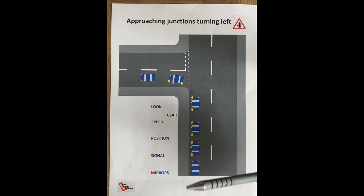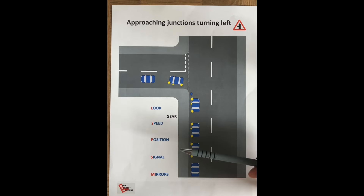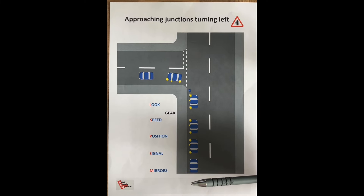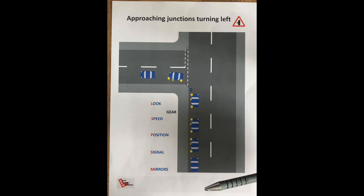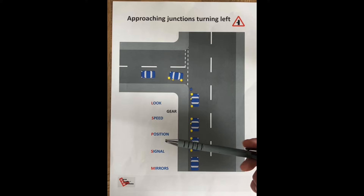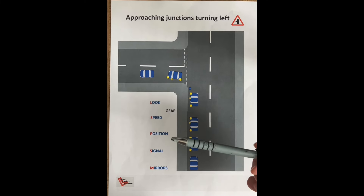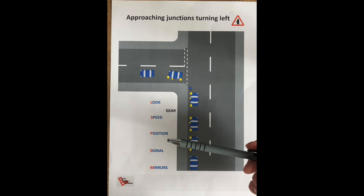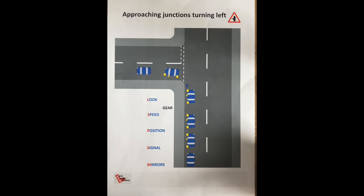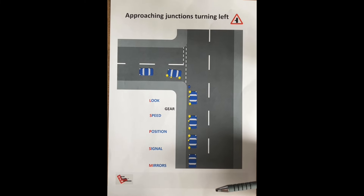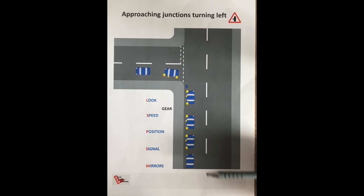Mirror Signal Manoeuvre starts the same way as your previous lesson. You go interior mirror and left mirror to approach a junction on the left — major to minor. Check the interior mirror to see the distance and speed of the person behind you, because it's a flat glass mirror that shows you the truth. Then check your left mirror to see if there's any vehicle on the left that would prevent you from turning left — like a bike undertaking you.